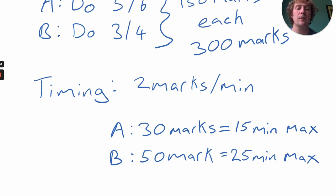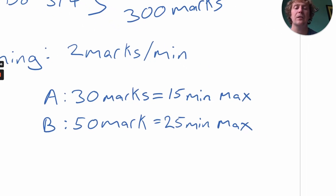Now, if you want a bit of time at the start to read through the paper, pick your questions, and then at the end to go back over your exam, you might want to reduce this down a little bit and stick to maybe 13 minutes for Section A questions and 23 minutes for Section B questions. That'll give you time to read through the paper at the start, pick your questions, and then at the end go back over it to make sure you've answered everything you need to answer.